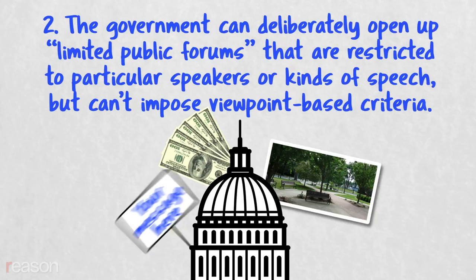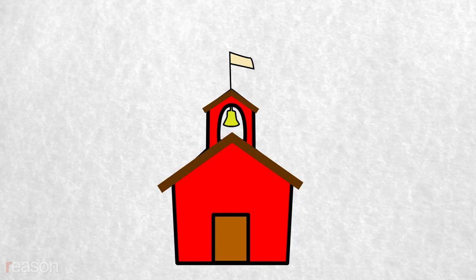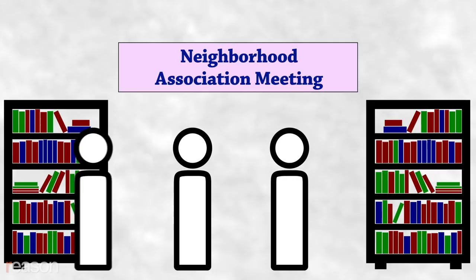Rule 2. Sometimes the government deliberately opens up property or funds in order to promote a wide diversity of private speech using objective criteria. Many public schools, for instance, let student groups use classrooms that aren't otherwise being used. Public libraries often offer rooms for meetings of community groups. Sometimes public universities might offer free email accounts or web hosting to all students, and sometimes public universities offer money to student groups to publish newspapers or invite speakers.